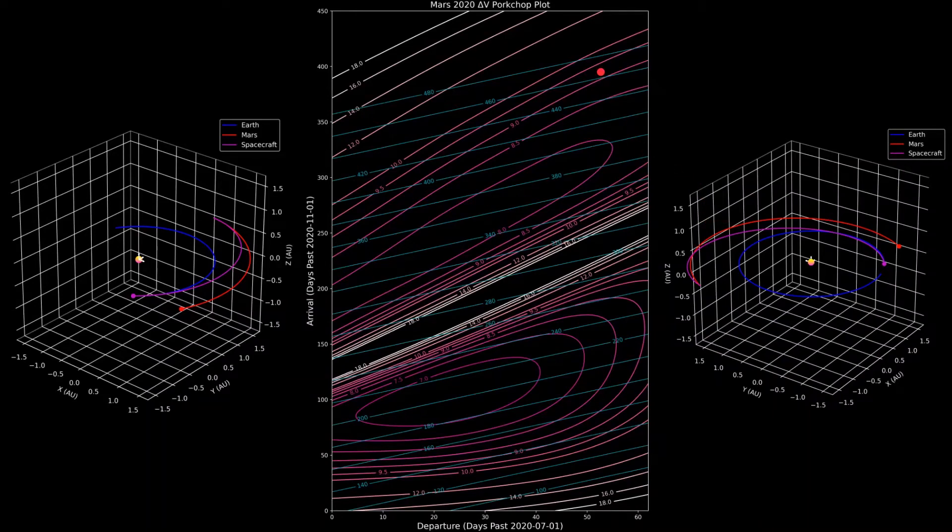The plot in the middle is a pork chop plot of the 2020 launch opportunity from Earth to Mars. On the left is a trajectory with roughly 190 days of travel time, and on the right is another trajectory with roughly 350 days of travel time.